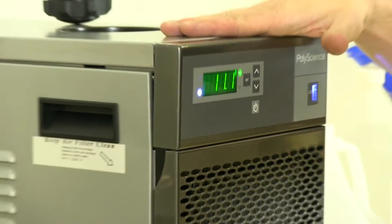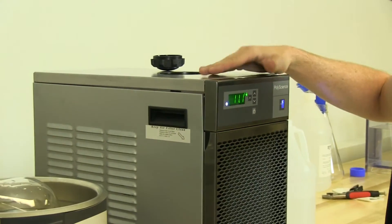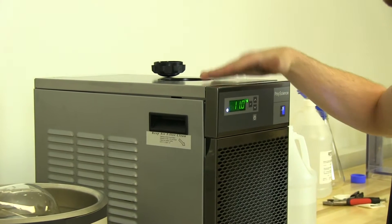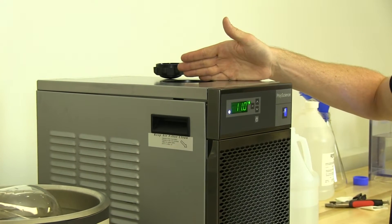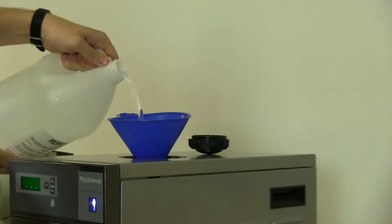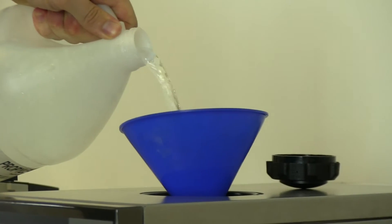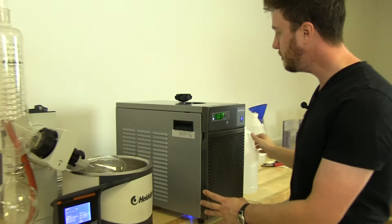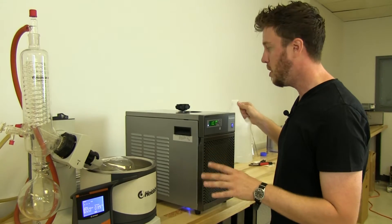Now, filling the PolyScience LM6 mini chiller is rather simple. We use propylene glycol, we pour that in here gently with a funnel, and then we top it off with water.